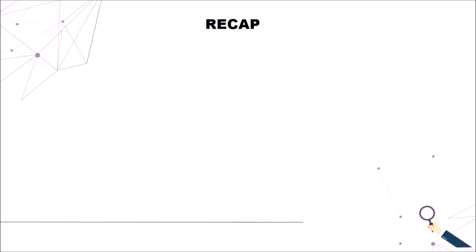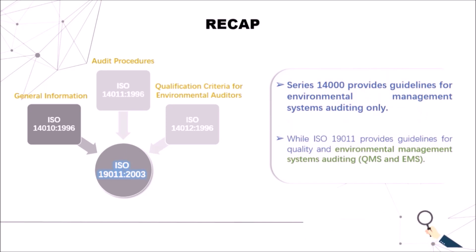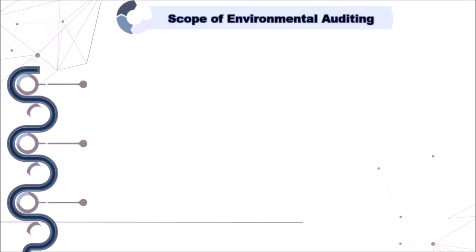Is your knowledge about environmental auditing still fresh? Here are a few clues for a review. ISO 19011-2003 is characterized by three interdependent standards: ISO 14010-1996 for general information, ISO 14011-1996 for audit procedures, and ISO 14012-1996 for qualification criteria for environmental auditors. You only need to stay conscious of the numbers. The 14000 series merely provides guidelines for environmental management systems, whereas ISO 19011 offers guidance for both quality management systems auditing and environmental management system auditing.